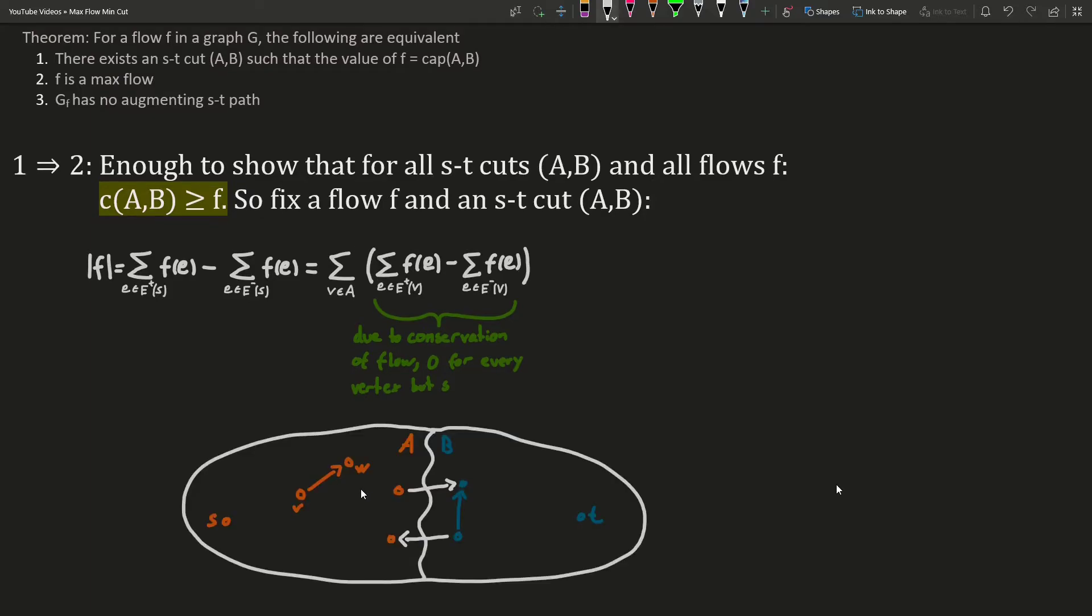I've sketched the ST cut A, B down here for our next consideration. Note that there are four cases for edges. There are edges with both endpoints in A, edges with both endpoints in B, edges going from A to B, and edges going from B to A. We will rewrite the sum again by thinking about how often each edge shows up in the sum.